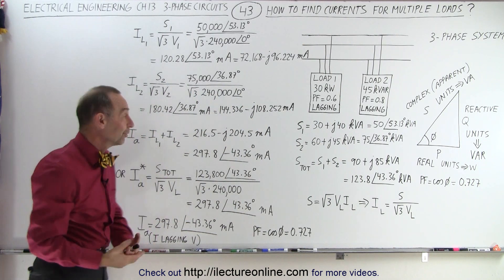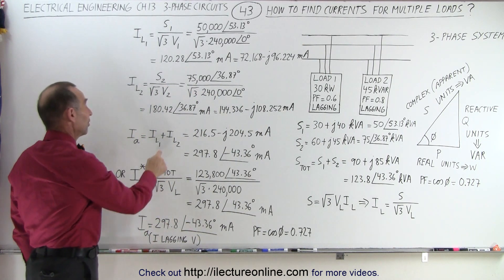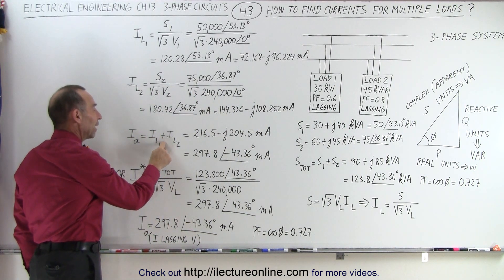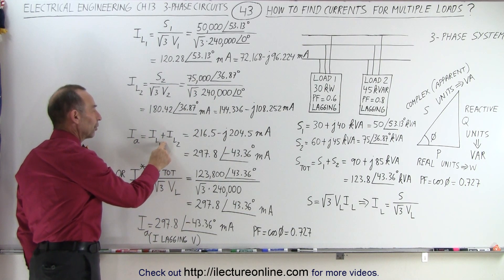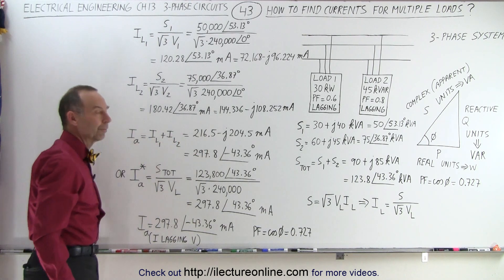How do we find the total current? Simple — we perform an algebraic sum of the two currents to get the total current.